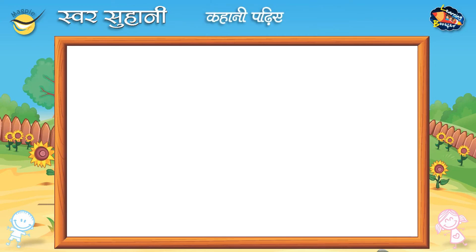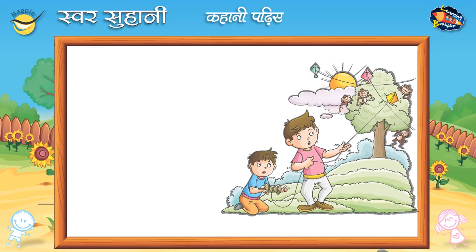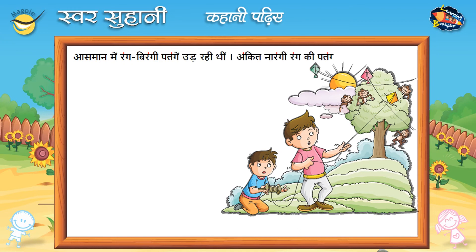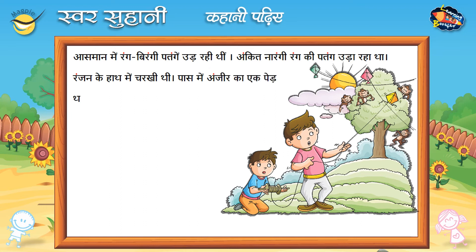कहानी पढ़िये। आसमान में रंग बिरंगी पतंगे उड़ रही थी। अंकित नारंगी रंग की पतंग उड़ा रहा था। रंजन के हाथ में चर्खी थी। पास में अंजीर का एक पेड़ था।